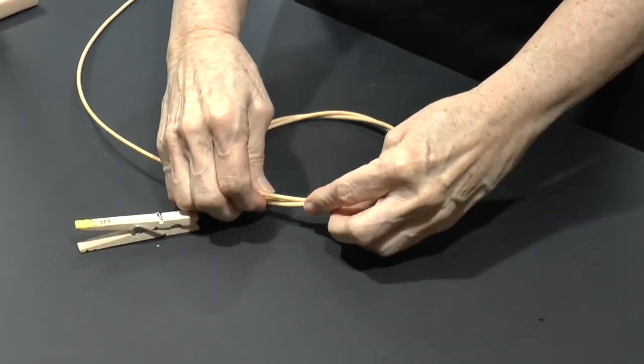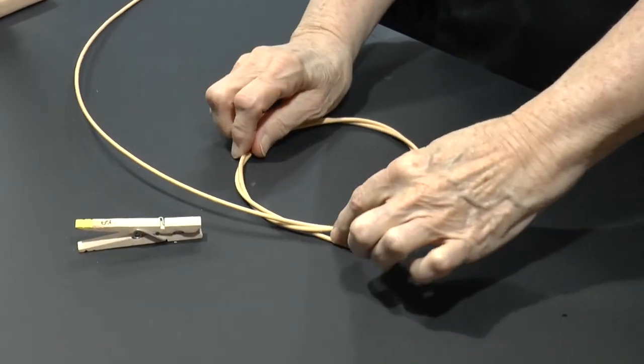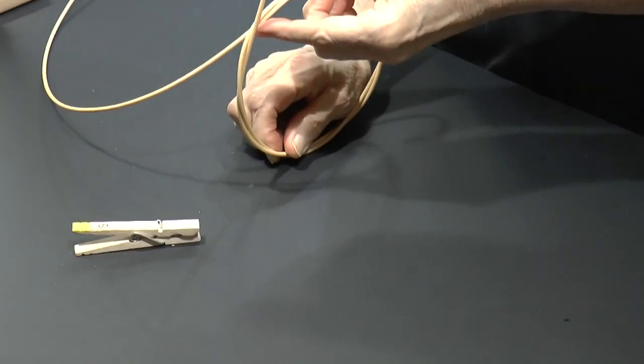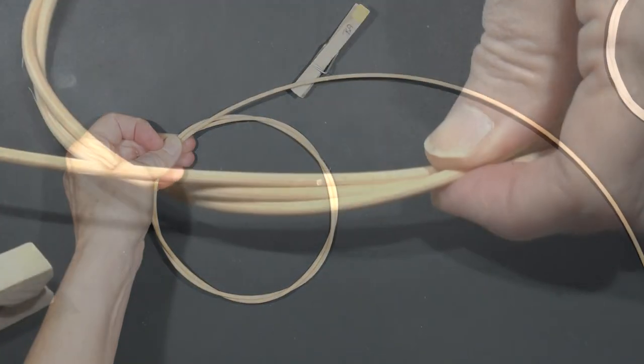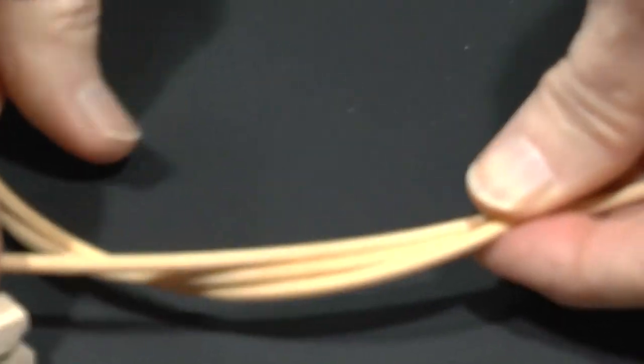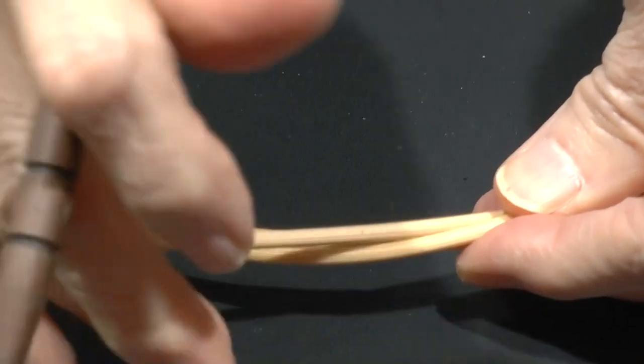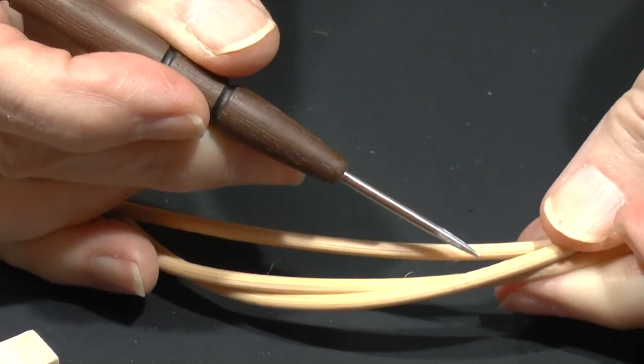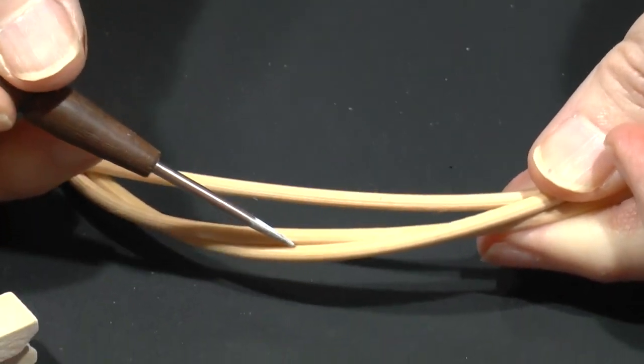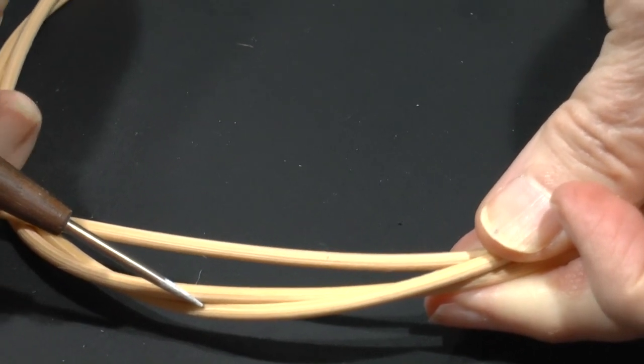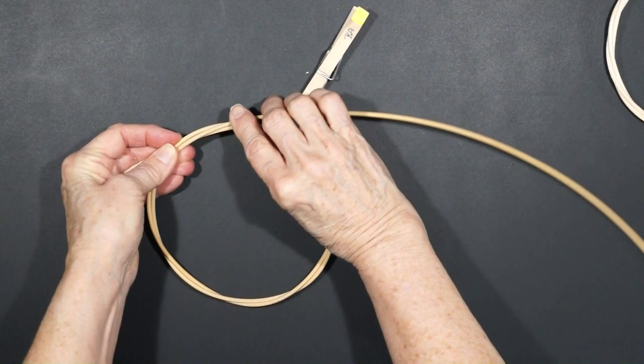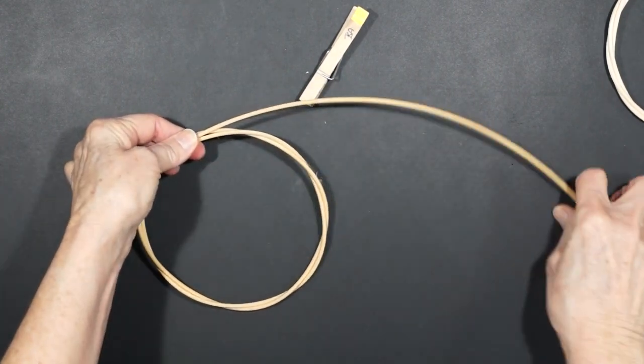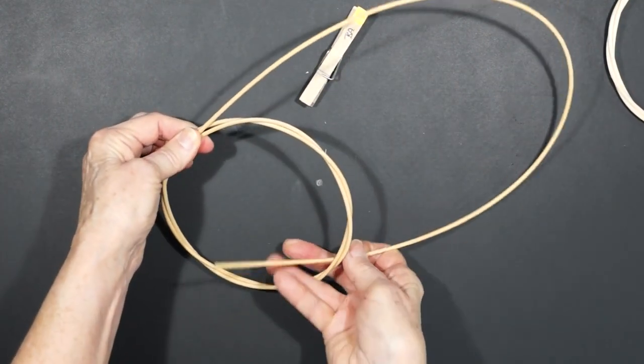This will hold the ring together so we can now put the clip aside. That leaves us with the tail protruding from the underside. We now go around the ring one more time. This time, we're going to follow a natural track created by our previous wrap. We'll take the reed and place it in that groove and follow it around the circle. It will wrap this circle 4 times.